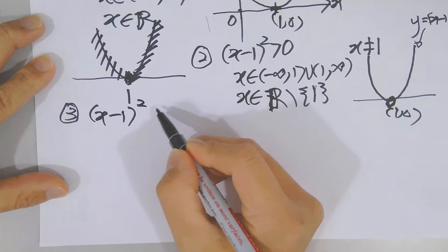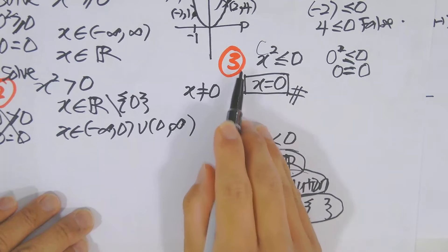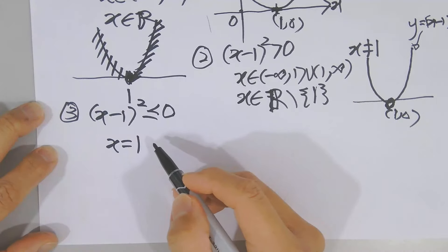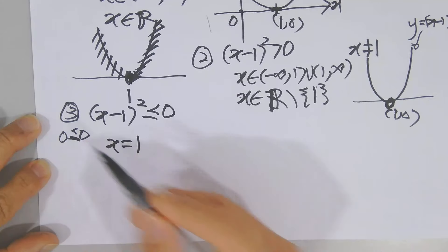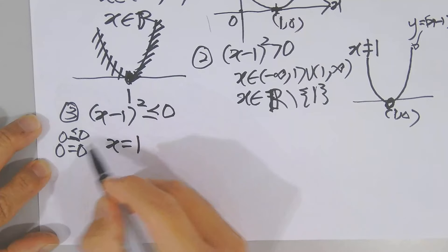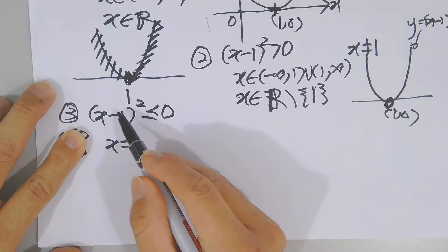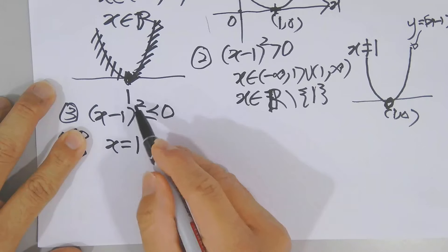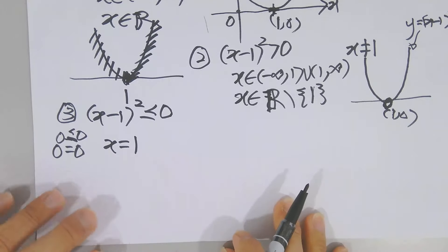For Case 3 applied: (x − 1)² ≤ 0. Based on the foundational Case 3, the answer is only x = 1. Why? If x = 1, then 1 − 1 = 0, and 0 ≤ 0 is satisfied by the 'equal to.' Any other value, like negative two: (−2 − 1)² = (−3)² = 9, and 9 ≤ 0 is false. A squared expression cannot be negative, but it can be zero — which only happens when x = 1.